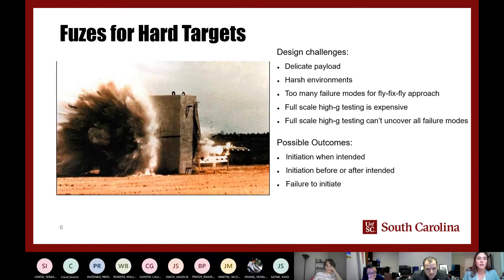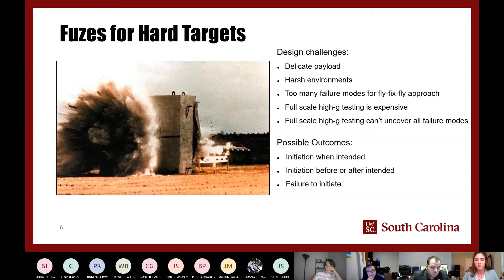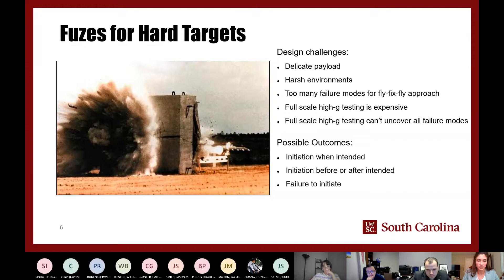The main example used for this research is the design of fuses for hard targets. Some challenges that come with designing fuses include a delicate payload — the ballistic package — exposed to a harsh environment such as a concrete wall. There are too many failure modes for a fly-fix-fly approach, and full-scale testing is too expensive. Even with full-scale testing, you can't uncover all failure modes. The nice thing is there are only three possible outcomes: initiation when intended, initiation before or after intended, and failure to initiate.